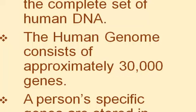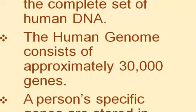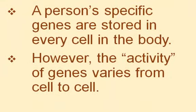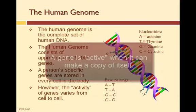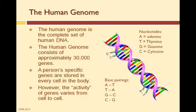The human genome project, started back in 1990, found that the human genome consisted of 30,000 genes. However, of these 30,000 genes, we can also form mutations caused by radiation exposure, errors in the replication process, and many other factors. It is important to note that a person's genes are stored in every cell of the body. However, the activity of genes varies from cell to cell. A gene is said to be active when it can make a copy of itself, and how a gene makes a copy of itself is a completely different lesson.